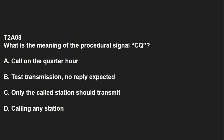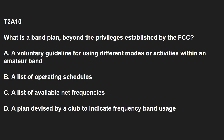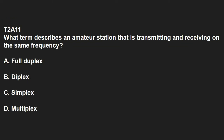T2A08: What is the meaning of the procedural signal CQ? That would be calling any station. T2A09: Which of the following indicates that a station is listening on a repeater and looking for a contact? The station's call sign followed by the word monitoring. T2A10: What is a band plan beyond the privileges established by the FCC? A voluntary guideline for using different modes or activities within an amateur band. T2A11: What term describes an amateur station that is transmitting and receiving on the same frequency? That is simplex operation.